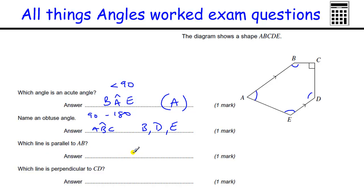Which line is parallel to AB? Parallel lines are denoted by these arrows. Arrows tell you where parallel lines are, and so the one that's parallel to AB is ED, or DE. Which line is perpendicular to CD? Perpendicular means right angles, and here's our right angle. So the one that's right angle to CD is BC.